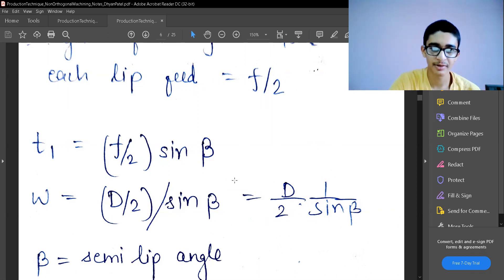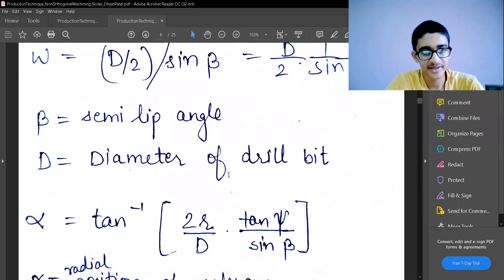Now let's come back. The t1 uncut chip thickness is given as f by 2, feed by 2 into sine beta, and the width of cut is given by depth of cut divided by 2 divided by sine beta. So actually it will be d by 2 sine beta. The capital D is the diameter of the drill bit. The drill bit is the threaded part which you see which is going to do the drilling operation, which you fit in front of the drill machine.